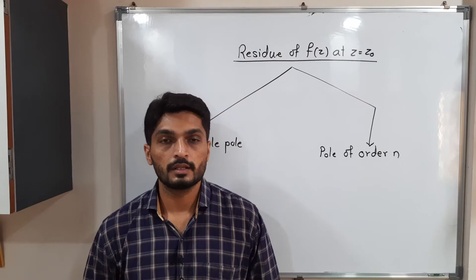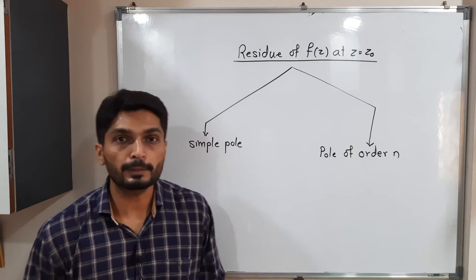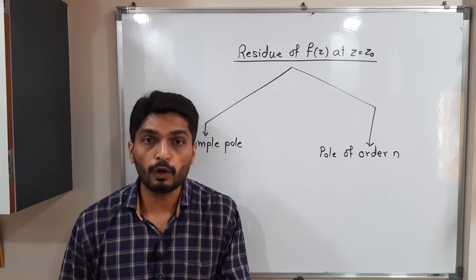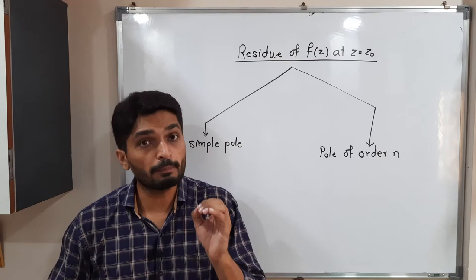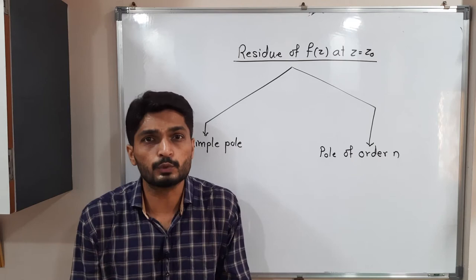Now let us discuss formulas for finding residue. There are two different formulas as per the given problem. If we have a pole of order 1, that means a simple pole, we have one formula. If you have a pole of order n, we have a second formula. You may be confused about what is a simple pole and what is a pole of order n. Let us discuss an example.